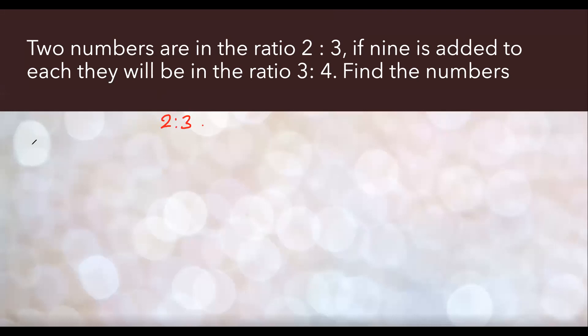In this, you write down a statement. Let the two numbers be equal to 2x and 3x. Then it goes on to say if 9 is added to each of them. Now already they are in ratio. So it means 2x upon 3x. We are not cutting x right now because he is saying 9 is added to each of them. So we add 9 to each of them.